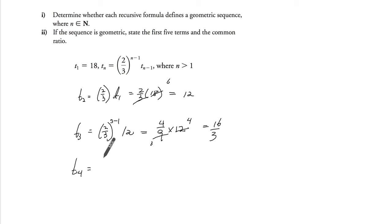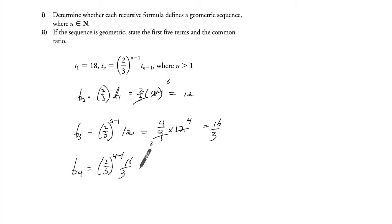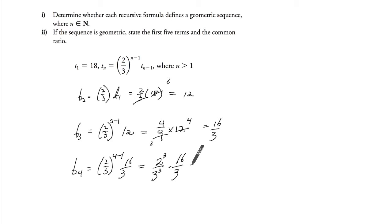t4: it's to the power of 4 minus 1, and you multiply by t3, which is 16/3. So that's 2 to the power of 3 over 3 to the power of 3, times 16/3. This gives 2 to the power of 7 over 3 to the power of 4.